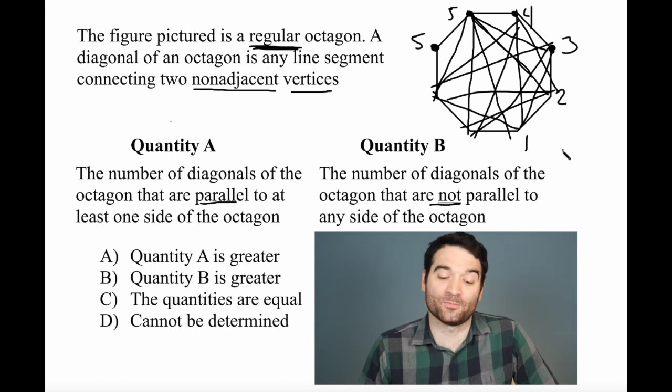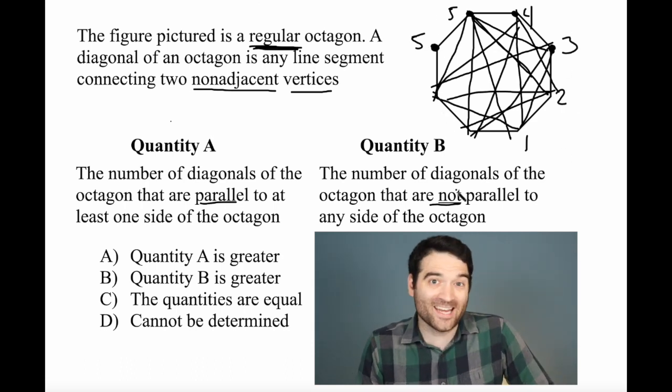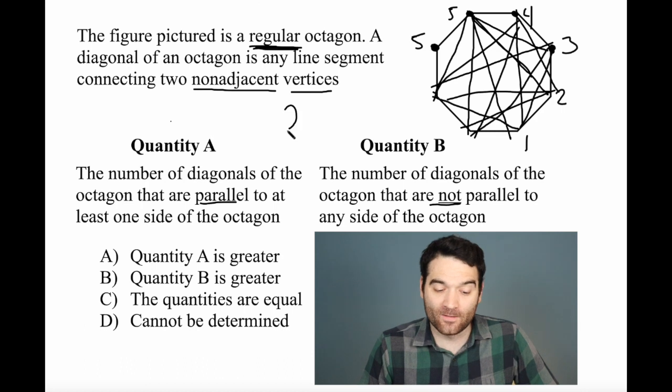So if I count these up, five plus five plus four plus three plus two plus one, I find that there are 20 diagonals overall.